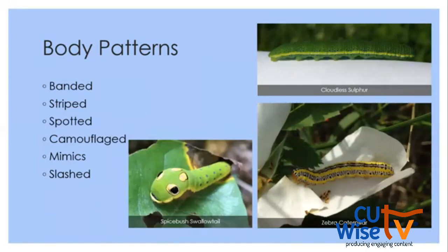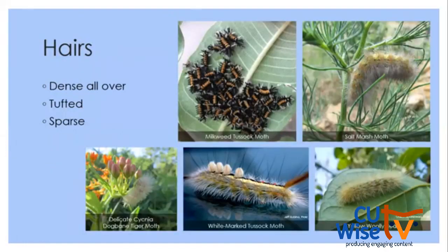Caterpillars can be banded — like that orange, white, and black one — or striped. Stripes run the length of the body while bands wrap around the body segments. Caterpillars can also be spotted, mottled, camouflaged, they can mimic other creatures, and they can have slashes on them. The spicebush swallowtail, for example, has eye spots that make it look like a much larger creature to a bird coming to eat it.